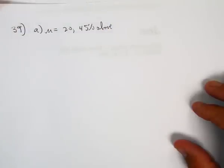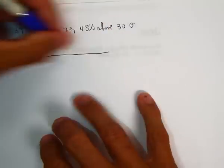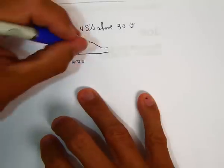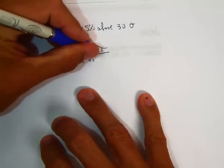Let's look at problem 39. In part A, we know that mu is 20. We know that there's 45% above 30 and we don't know what sigma is. So if we draw a quick picture, mu is 20 and 45% are above 30. So 30 must be to the right and this must be 45%.